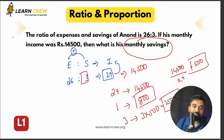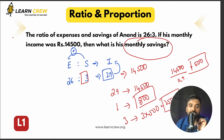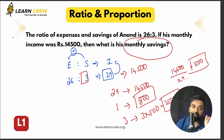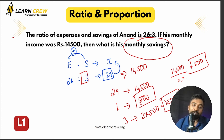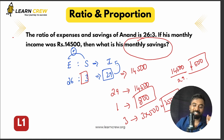So his monthly savings was ₹1,500 and his expense was ₹13,000. The logic: expense ratio plus savings ratio gives income ratio; divide total income by total parts to get one part value; multiply by savings parts.